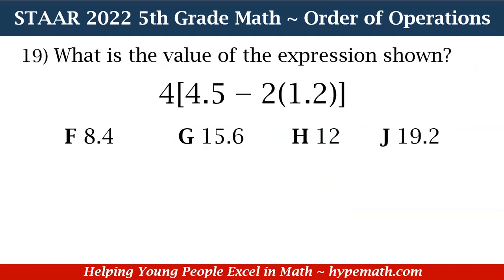Let's dive into our first problem. Remember, we have our 5th grade math review workbook available for purchase in our store. Number 19 says: what is the value of the expression below? The expression is 4, then in brackets, 4.5 minus 2 times 1.2, end bracket.